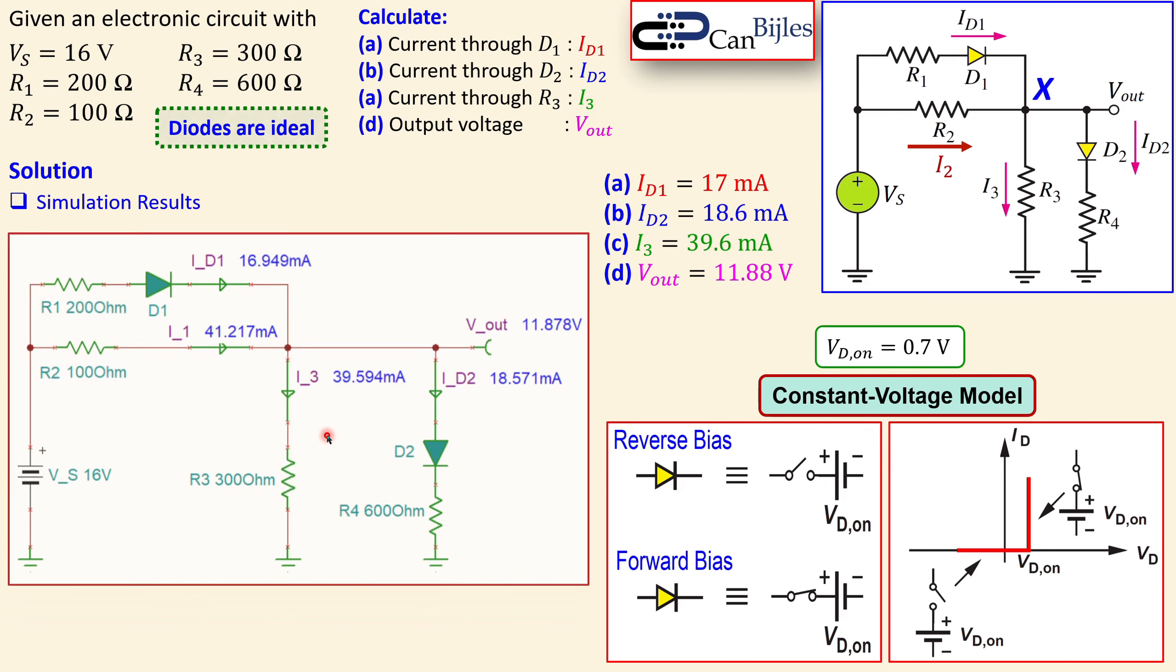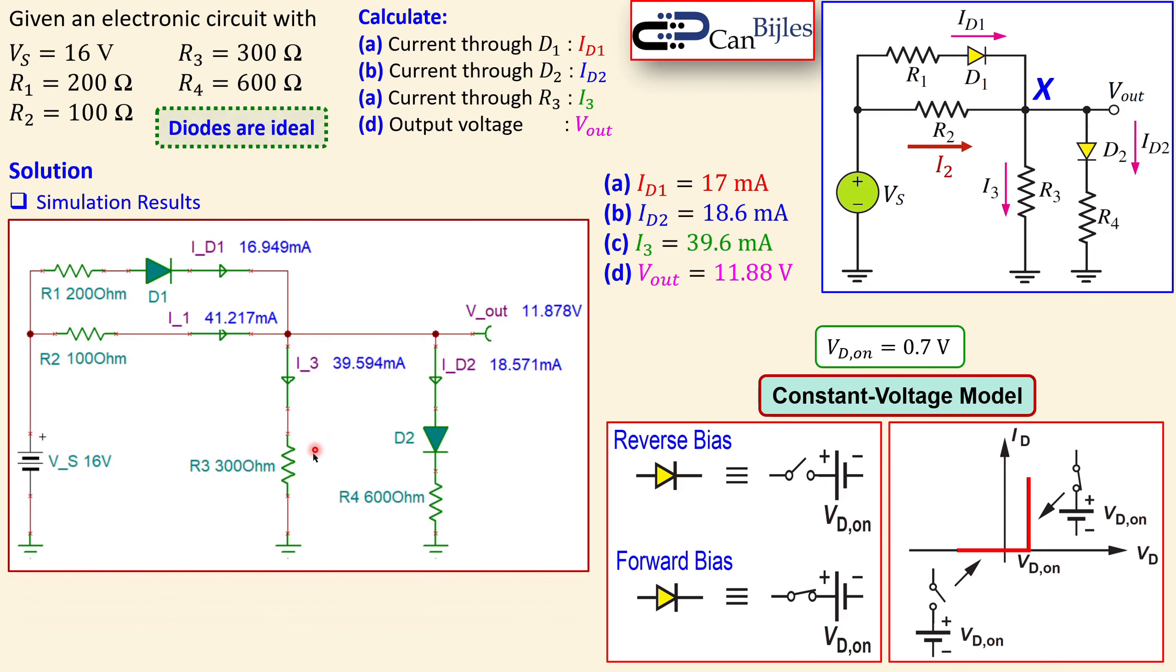Let's also look at the simulation results. That's also very important. You see here the circuit already drawn. So we see the 16 volts, the resistors, and also diode 1 and diode 2. You see here the Vout node. We'll measure here the Vout. And there's also current arrows here in four branches.